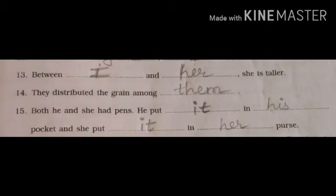Number thirteen: between dash and dash, she is taller. Between 'I' and 'her', she is taller. Woh kis se zyadha badi hai? Toh mere aur us se — donon mein se woh zyadha badi hai. Number fourteen: they distributed the grain among dash. Here 'they' is given — they is a personal pronoun — so with 'they' we are using 'them', 'their', 'theirs'. Number fifteen: both he and she had pens — he and she both are personal pronouns. And pen is a non-living thing. He put a dash in dash pocket. In this blank, 'he' is given, so 'he put it' — I write 'it' in the first blank because pen is a non-living thing. That's why I write 'it' in the first blank.